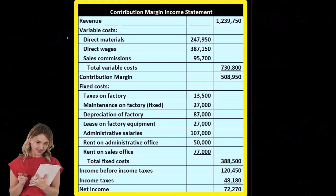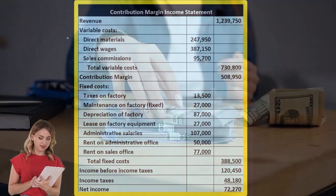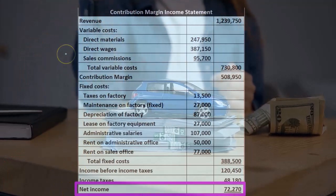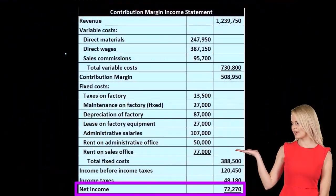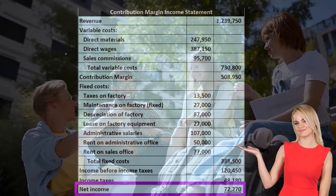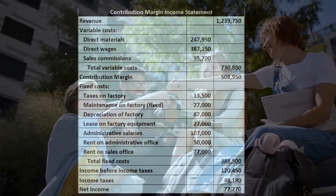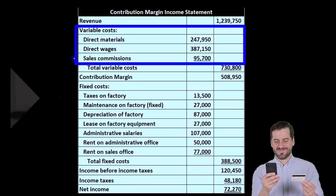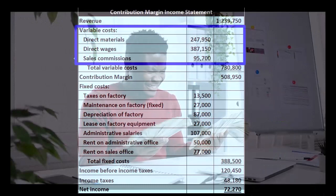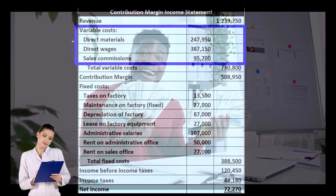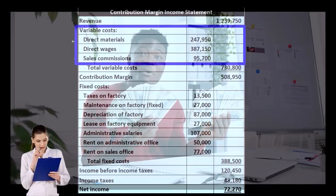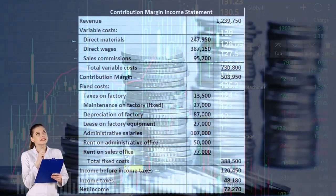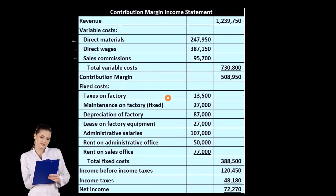We want to break our normal income statement into a contribution margin type of income statement. We'll have the same bottom line — the same net income — but we get there differently. We group not by what expenses do for us, but by how they behave. In the variable costs, for example, we have direct materials, direct wages, and sales commission. Notice that sales commission is totally different from cost of goods sold, but in the contribution margin format we group them together because they behave similarly, and that helps with projections.